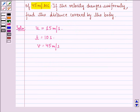From equations of motion, we know that v = u + ft, where f is the acceleration. Putting in the values, we get 45 = 15 + f × 10.